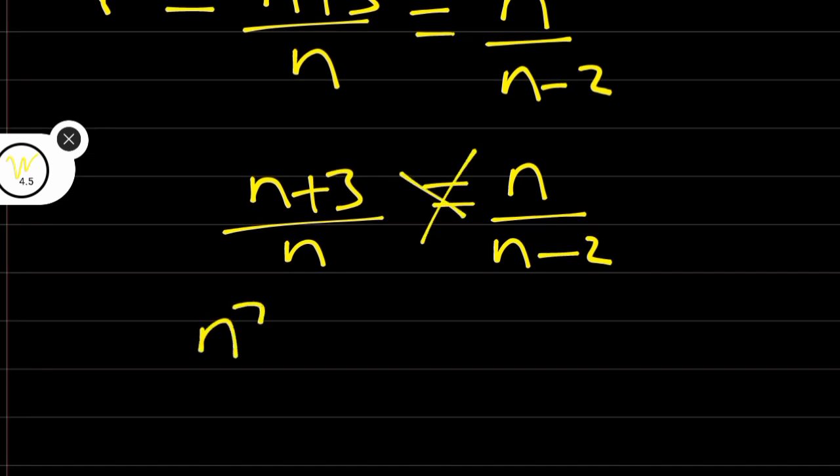Therefore, we have n squared is equal to n plus 3 times n minus 2.